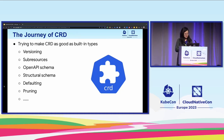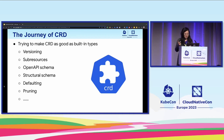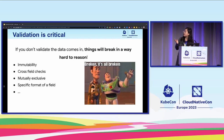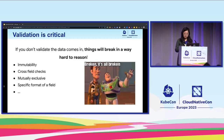In the past, we made a lot of effort to make CRD as good as built-in types. We added versioning support, sub-resources, an OpenAPI schema, a structural schema, and many other features. But along the way, one topic was continuously brought up: validation. Why are validations so critical? If you don't validate the data that comes into your system, things are going to break in ways that are hard to reason about, and debugging at that point becomes much more difficult.